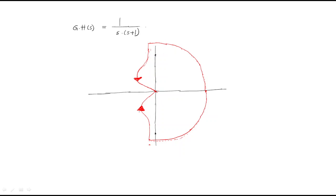The direction will change here. It starts from ω = 0, changes direction, and follows a path like this. It reaches one point, continues along the path, reaches the ending point, and then keeps moving continuously like this.